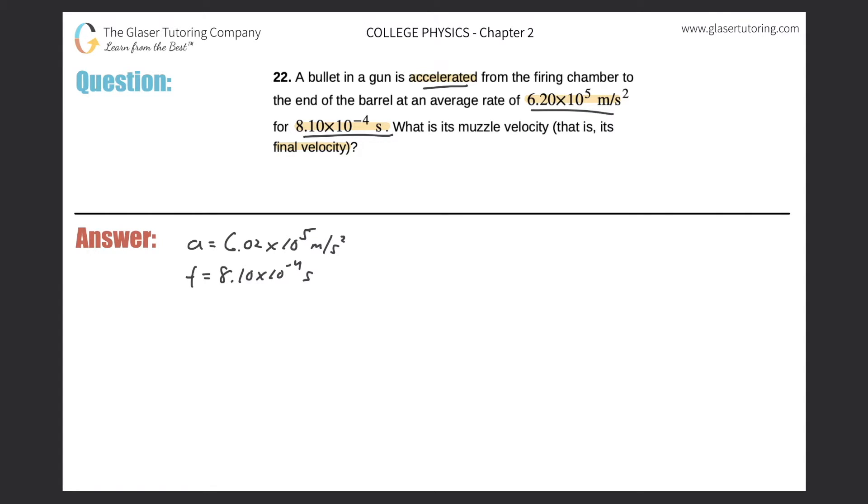It doesn't say it explicitly in the problem, but since the bullet is being fired, we have to assume that it is starting from rest. So in some books you might see it written as V0, that stands for initial velocity. I actually prefer to write VI, but they're going to mean the same thing. That's 0 meters per second. And then what they're asking for is they're asking for the final velocity, VF.